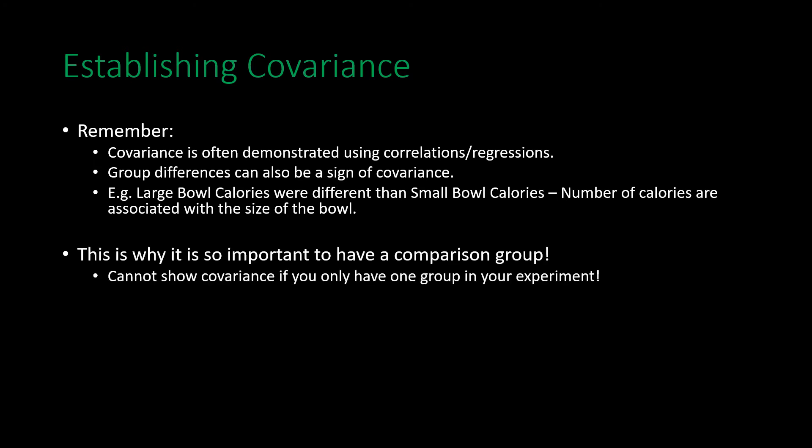It is very important to have comparison groups. If you only have one group in your experiment, there is no way to establish covariance because you only get one result with no basis for comparison — you can't know if that result is high, low, the same as before, or changed. All such questions require having some other group to compare to. Most experiments have a minimum of two groups and therefore are largely able to establish covariance.